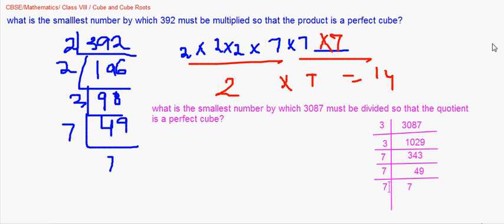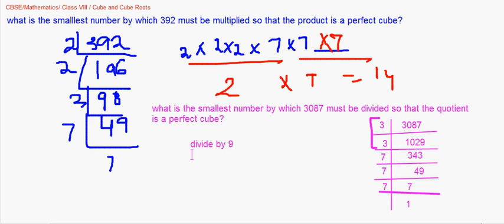From the factorization 3 × 3 × 7 × 7 × 7, the three 7s form a perfect group, but the two 3s don't complete a group of three. To remove them, we divide by 3 × 3 = 9. So 3087 ÷ 9 = 343, which is 7³. The answer is: divide by 9.